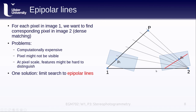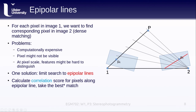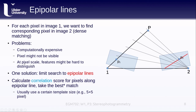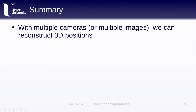Once epipolar lines are calculated, we compute a correlation score for pixels along each epipolar line, comparing similarity of points and taking the best match — generally the highest correlation score. Rather than doing this pixel by pixel, we typically use a matching template of a certain size, for example five pixels by five pixels, which is a common window size.